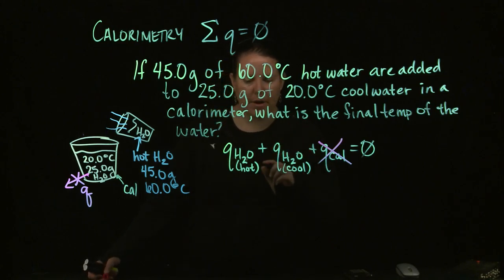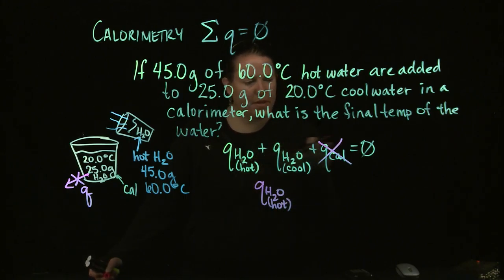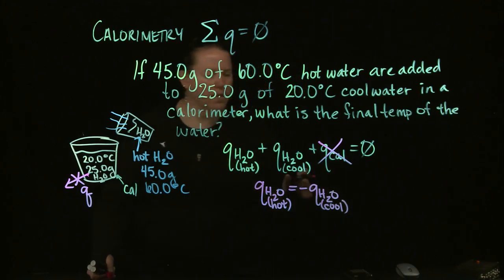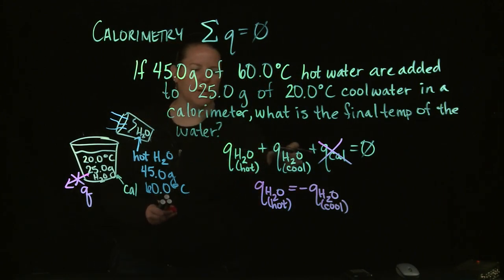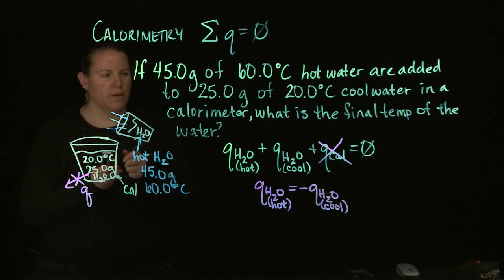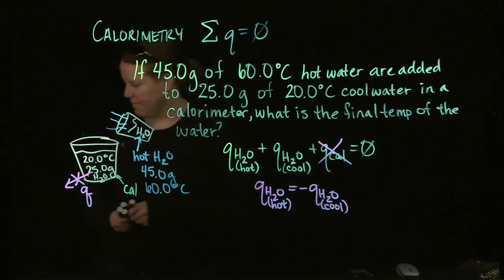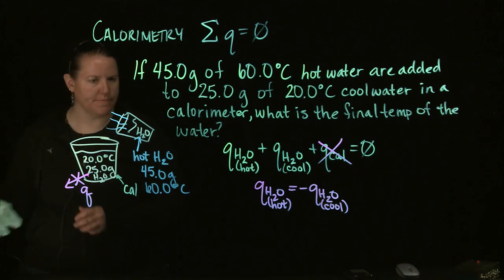Alright, so now I know the heat of my hot water. If I flip this over to the other side, would be equal to the heat of my cool water if I put a negative in front of it. Because I'm going to basically put this component of the equation on the opposite side, which means I need to put a negative in front of it.